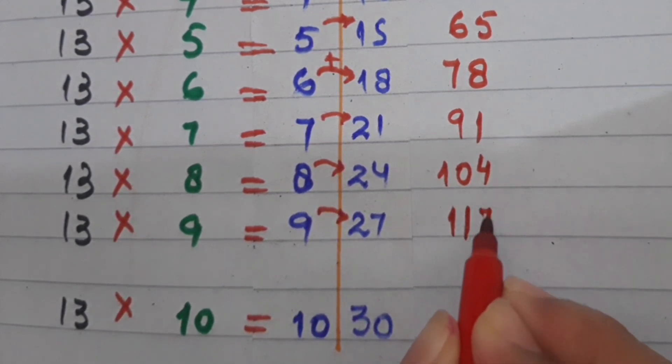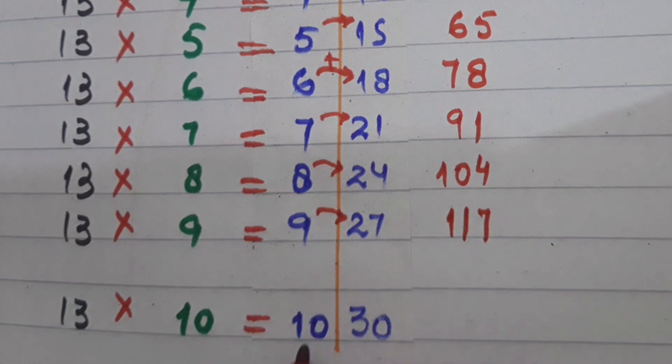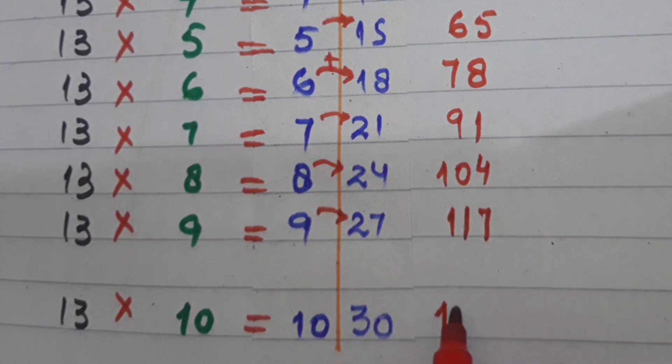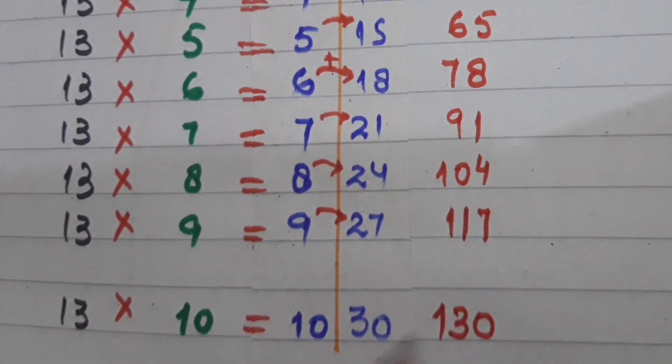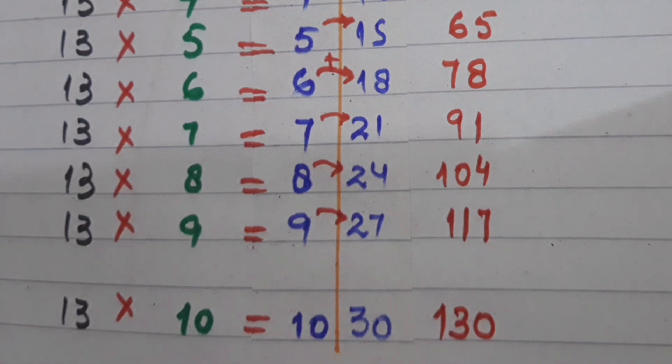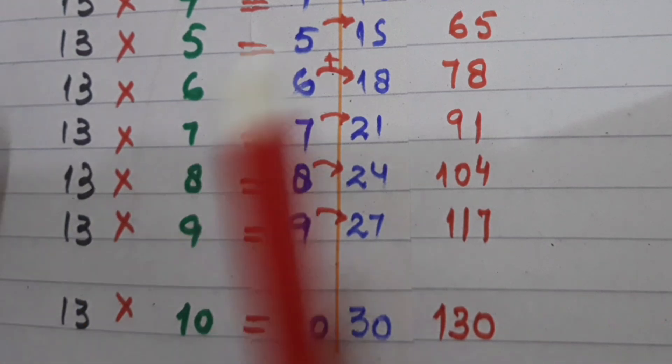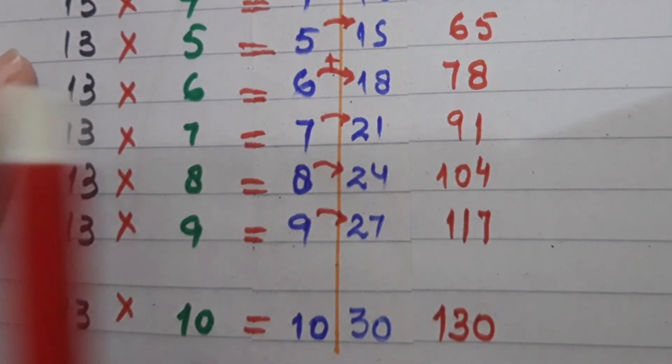Similarly, 9 plus 2 will be 11, and 7 will be written as it is. So 10 plus 3 is 13, and the last number 0 of the second number will be written as it is. So this is the simple trick and procedure for finding the table of 13.